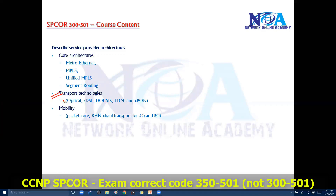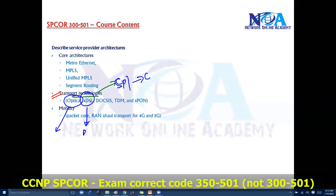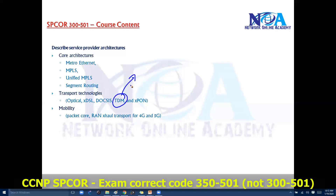We'll also cover transport technologies — the connectivity options used by service providers to connect their own sites or to connect to customers. Options include optical fiber connections, Digital Subscriber Line (DSL), and DOCSIS (Data Over Cable Service Interface Specification), which is an ITU standard for data transfer. We'll also cover multiplexing options: Time Division Multiplexing (TDM), Wave Division Multiplexing (WDM), and Dense WDM — focusing mainly on how TDM separates signals from each customer over the same wire.